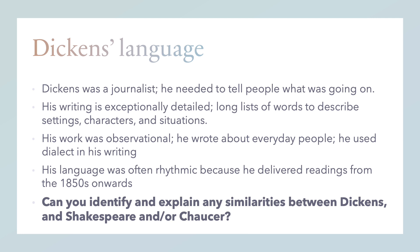Dickens's work was observational, so he wrote about everyday people. He would often use dialect in his writing — he would write as people spoke, acknowledging and using their own dialects and accents. His language was also often quite rhythmic. He delivered readings from the 1850s onwards, and often when you're reading Dickens, if you read it aloud, you can hear a real rhythm in the language that he used.